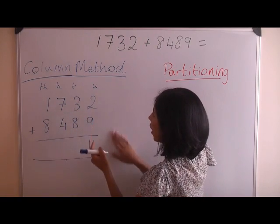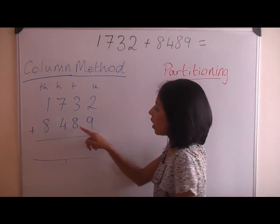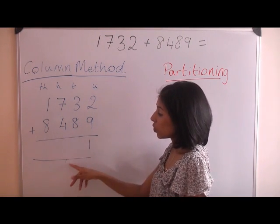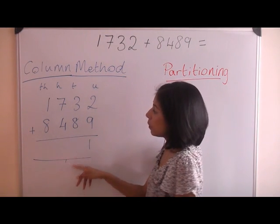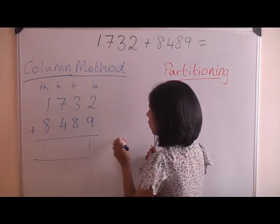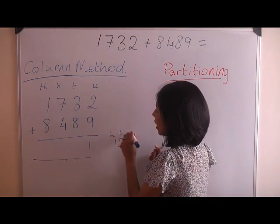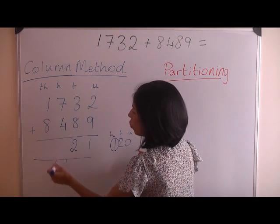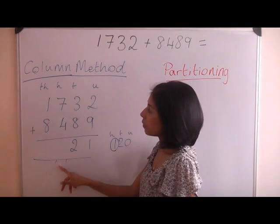Next, we have 30 and 80. 80, 90, 100, 110, 120. So we've got to add the one below that we carried over. That's 120. There's a 100, there's a 10, there's a unit. So we keep the 2 there and we carry the 100 over again to sit just below the line.